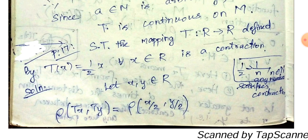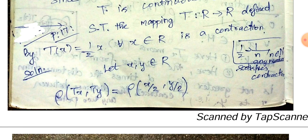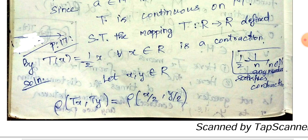So the mapping T from ℝ to ℝ defined by T(x) = (1/2)x for all x ∈ ℝ is a contraction. This is a direct contraction mapping example.